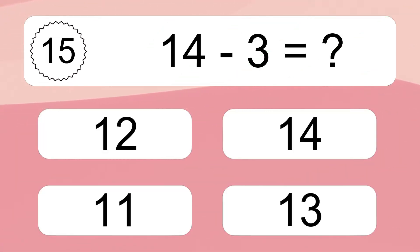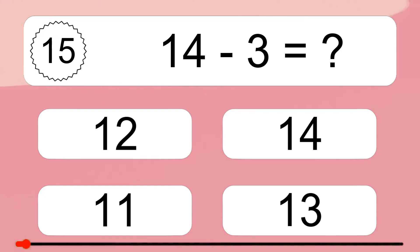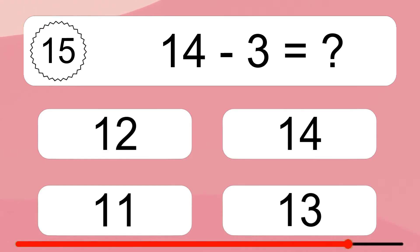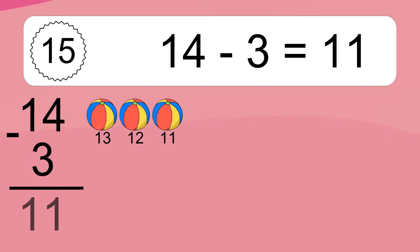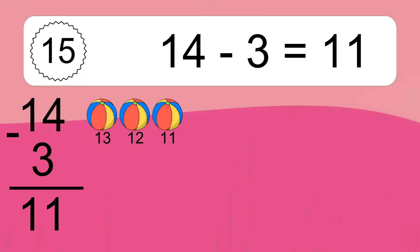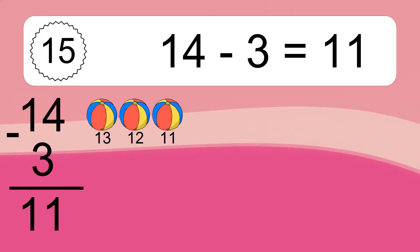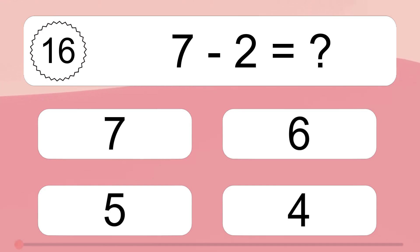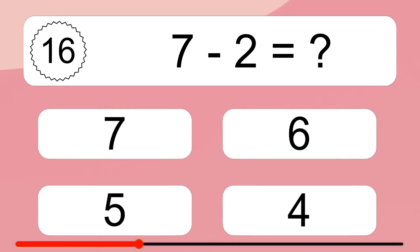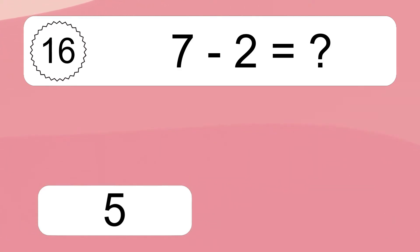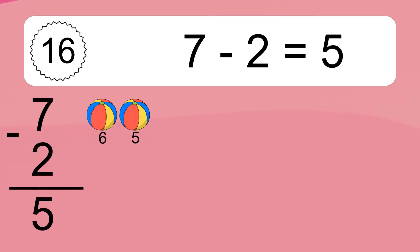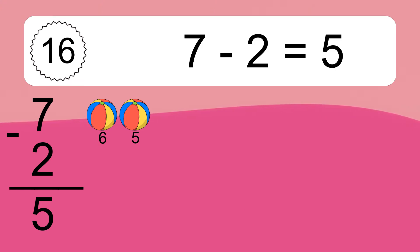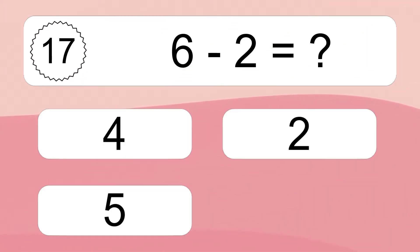14 minus 3 equals what? 14 minus 3 equals 11. Let's count it: 13, 12, 11. 7 minus 2 equals what? 7 minus 2 equals 5. Let's count it: 6, 5.